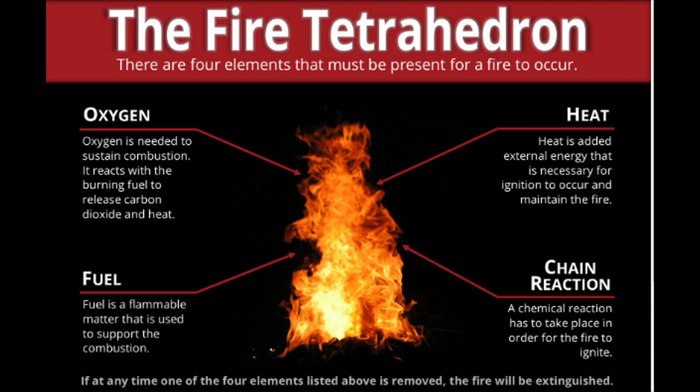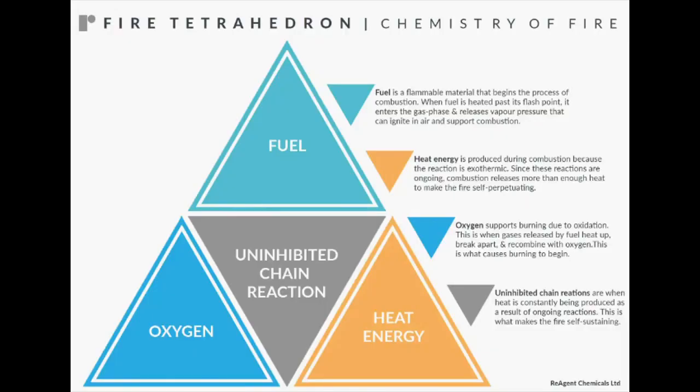A tetrahedron can be described as a pyramid, which is a solid having four plane faces. Essentially, all four elements must be present for fire to occur: fuel, heat, oxygen, and a chemical chain reaction. Removal of any one of these essential elements will result in the fire being extinguished.